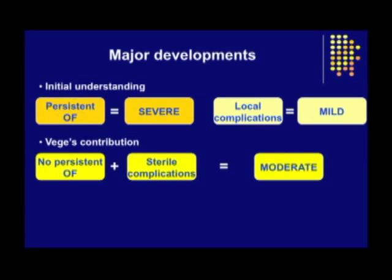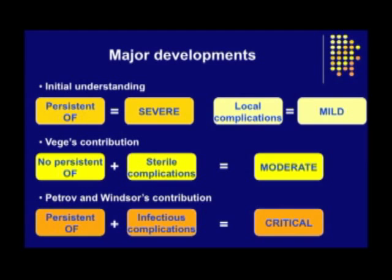Recently, the research group from the Mayo Clinic led by Dr. Badger provided sound evidence to justify the introduction of a moderate category of acute pancreatitis. Our findings, as just presented, support a new category of severity, with the worst prognosis category being those with both organ failure and infected pancreatic necrosis, termed critical acute pancreatitis.